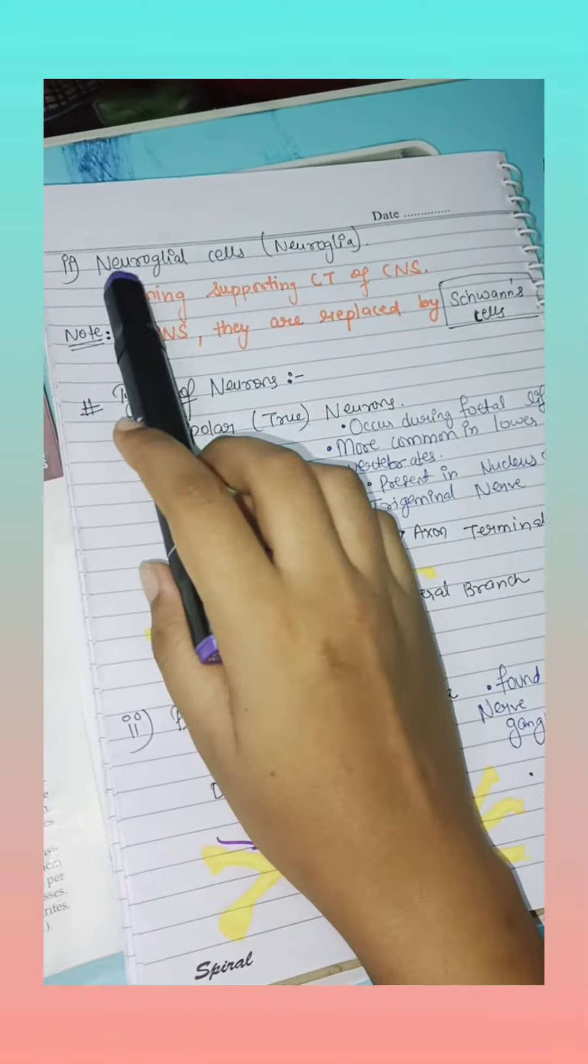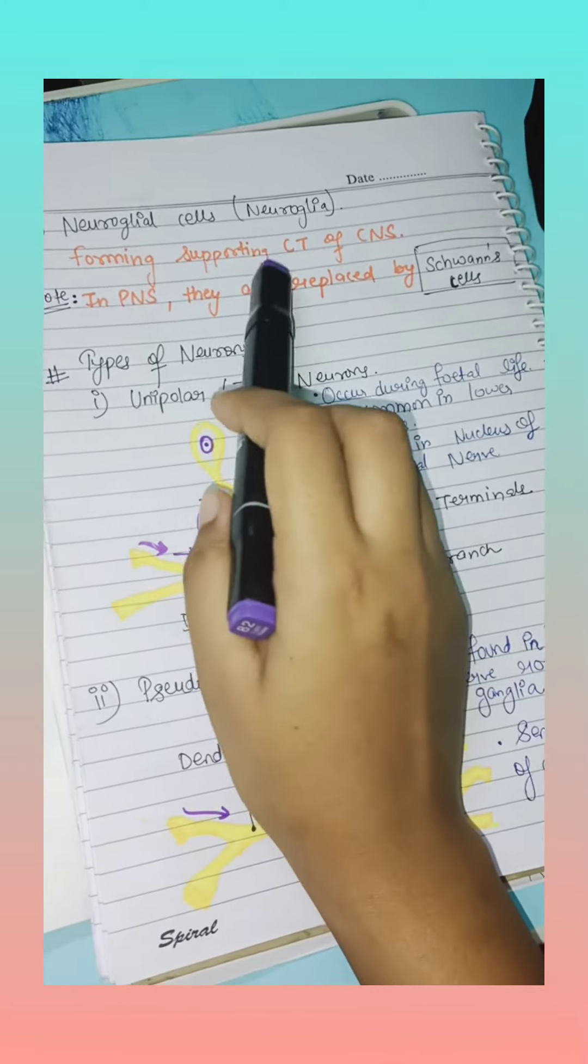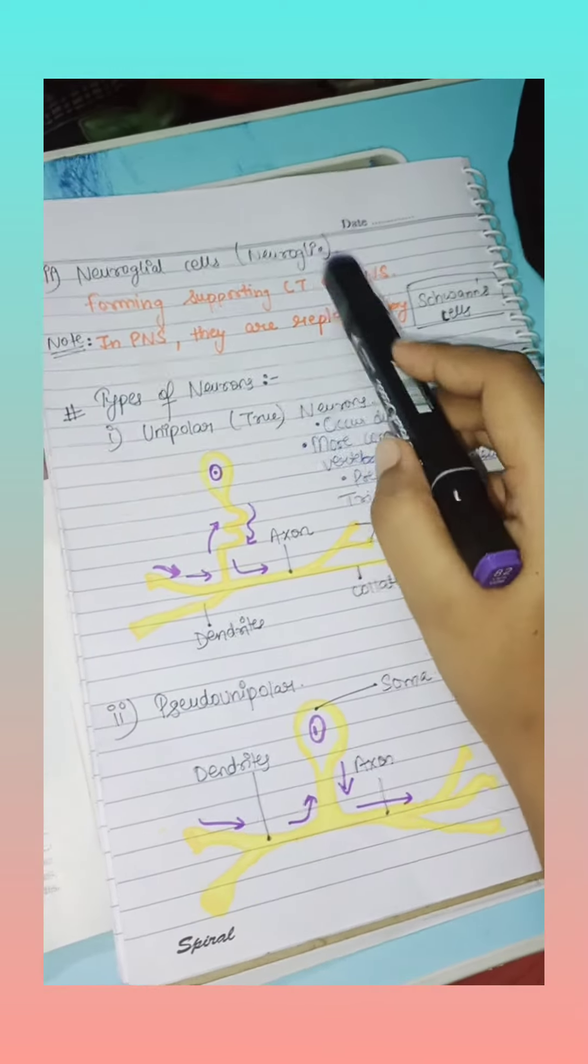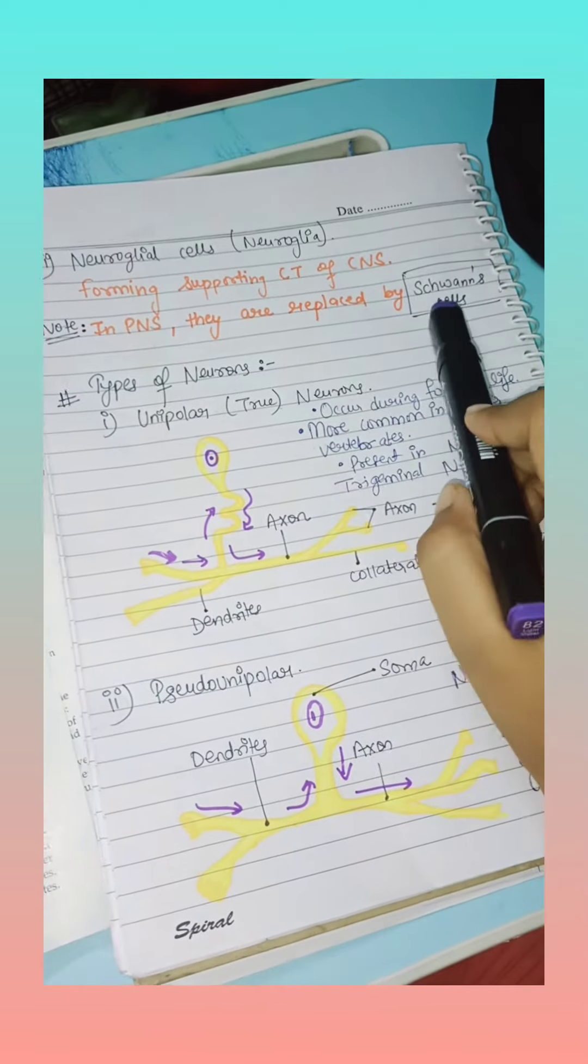Next, the second type is neuroglial cells or neuroglia. It forms the supporting connective tissues of the central nervous system. In the peripheral nervous system, it is replaced by Schwann cells.